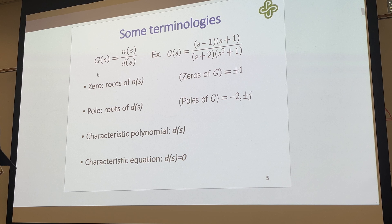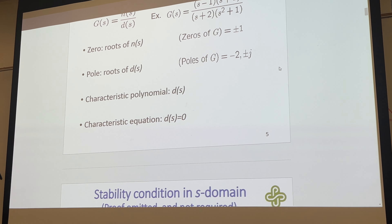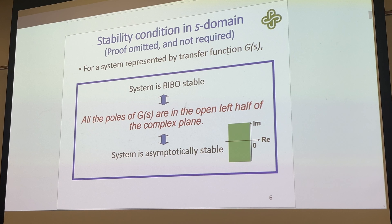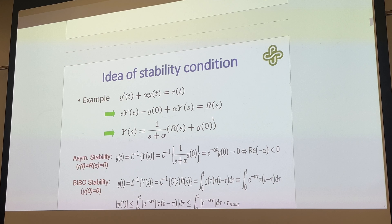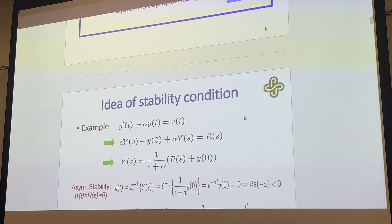This is a refresher from the time domain analysis. A zero is the root of the numerator of our transfer function, and poles are the roots of the denominator. We consider the denominator the characteristic polynomial, and we call the characteristic equation when the polynomial in the denominator is equal to zero.